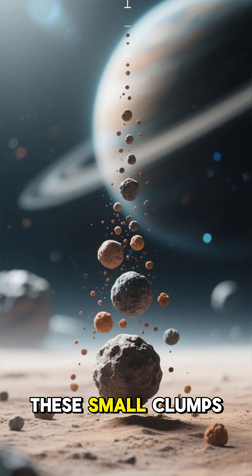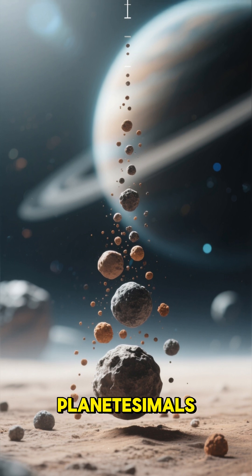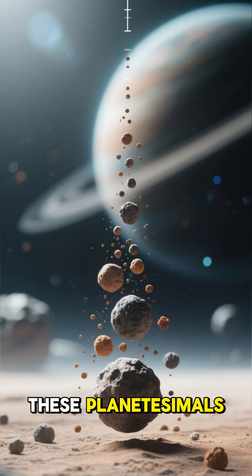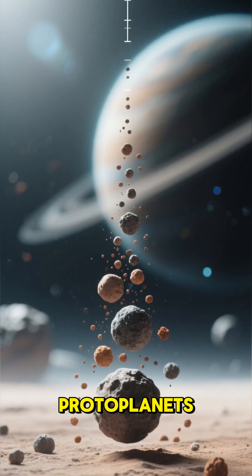These small clumps grew into larger bodies called planetesimals. And over millions of years, these planetesimals merged through gravity to form protoplanets.